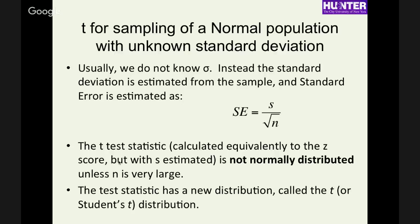So when we don't know sigma, the usual case, we estimate the standard deviation of individuals from a sample. The standard error is not going to be sigma over square root of n, it's going to be s over the square root of n. And the reason that that matters is that it turns out that the thing that looks like the z-score is not actually normally distributed. It is t-distributed.